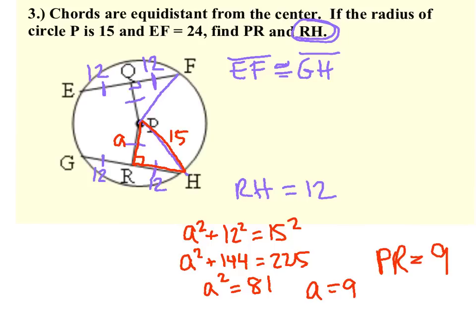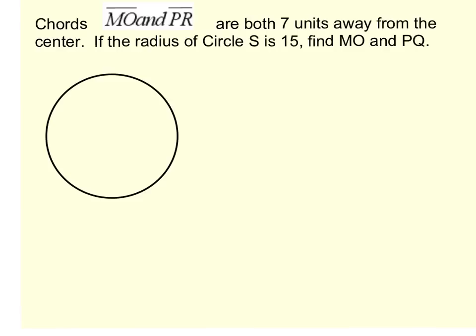So a lot going on in this picture. You have to use a couple of the different theorems we talked about. So EF is congruent to GH only because they are equidistant from the center. Also, because EF and GH are congruent, and because we have 90 degree angles here and here, when they tell us that EF is 24, we can cut that in half to get the two sides here that are 12. That means that GR and HR also have to be 12. And then from there, we have everything we need to figure out PR.